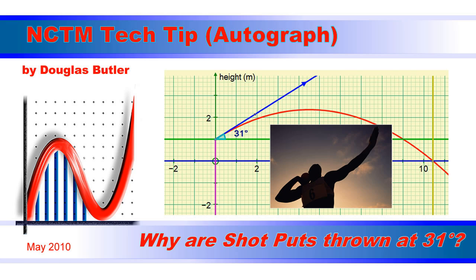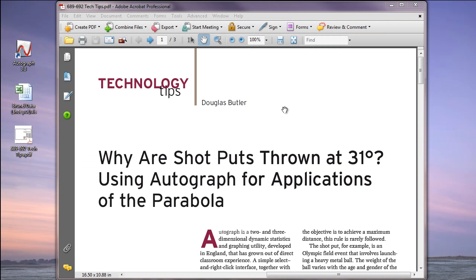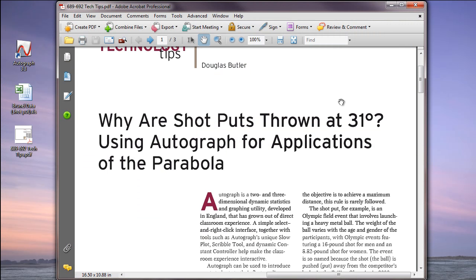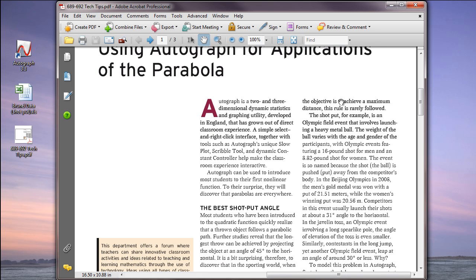Okay, baseball. So I was a bit surprised to read that not one of the athletic sports that are trying to achieve maximum distance use 45 degrees. The angle is more like 31 degrees. So what's going on here?